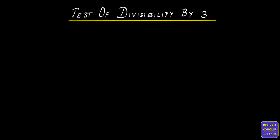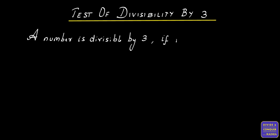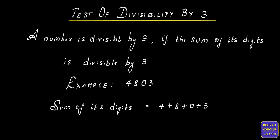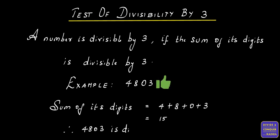Test of Divisibility by 3. The rule states that a number is divisible by 3 if the sum of its digits is divisible by 3. For example, let's consider the number 4,803. The sum of its digits is equal to 4 plus 8 plus 0 plus 3, which gives us 15. 15 is divisible by 3, so the above rule is satisfied. Therefore, 4,803 is divisible by 3.